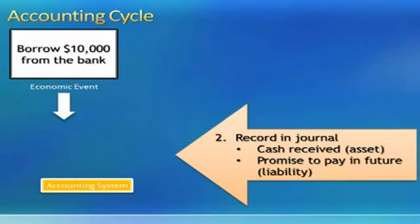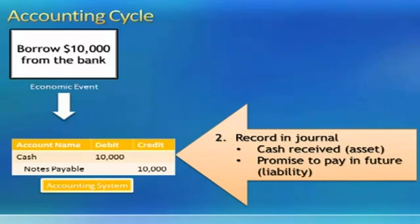Once we've analyzed the economic event, step number two is to record the economic event in the journal. To record the economic event of borrowing $10,000 from the bank in the journal, we debit cash and we credit notes payable.